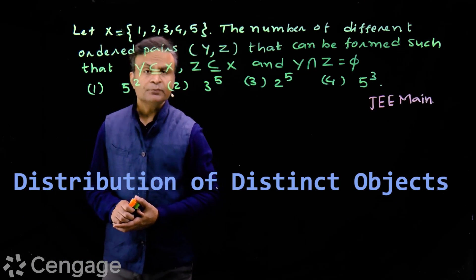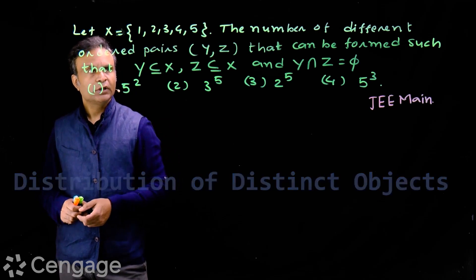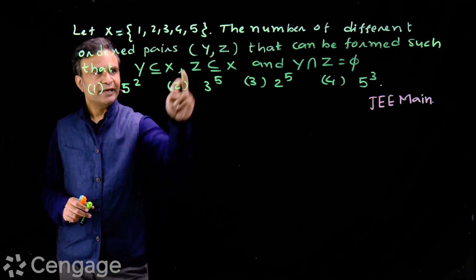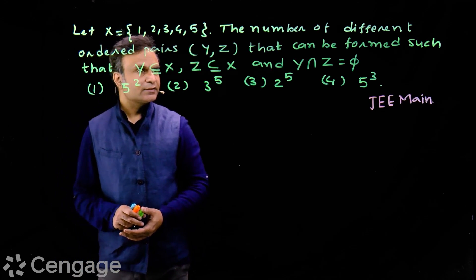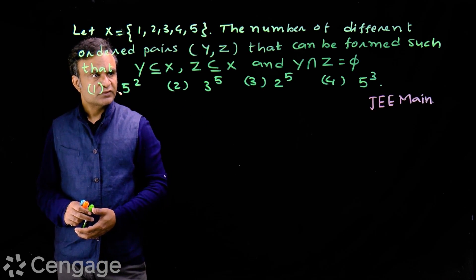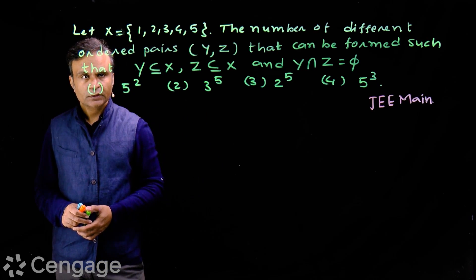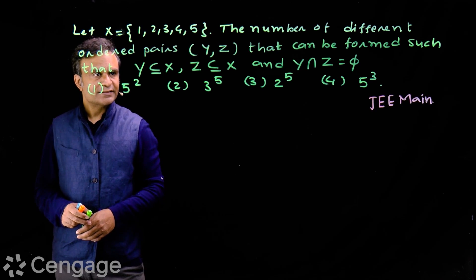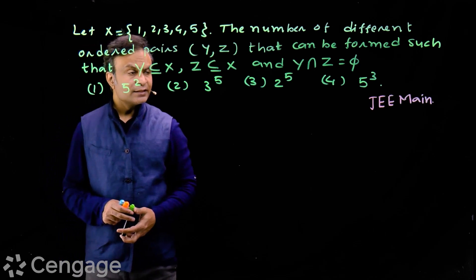We have this question asked in JEE Main exam. The question is: let set X = {1, 2, 3, 4, 5}. Find the number of different ordered pairs of sets Y and Z, where Y and Z are sets such that Y is a subset of X, Z is a subset of X, and Y intersection Z is the null set. So set X is the universal set, Y and Z are subsets of X, and Y and Z are disjoint sets.